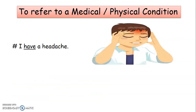Next, to refer to a medical or physical condition — it shows someone's medical and physical condition. For example, 'I have a headache.' Here, 'I' is a plural pronoun, so we make use of the verb 'have'. Have indicates the physical and medical condition of a person.